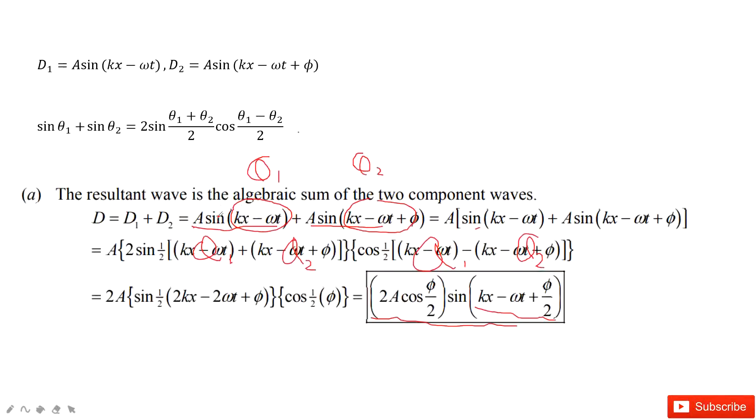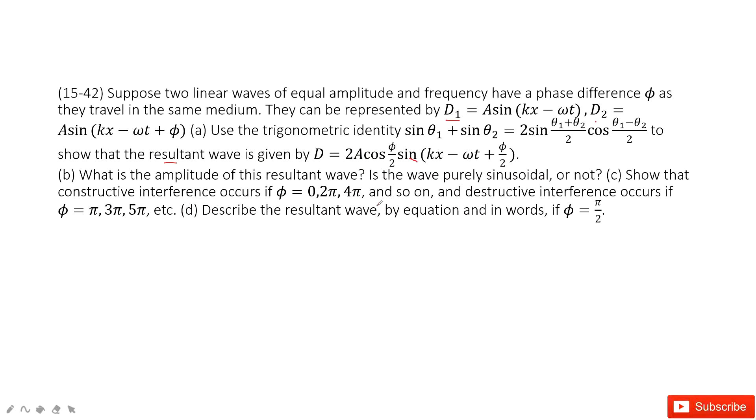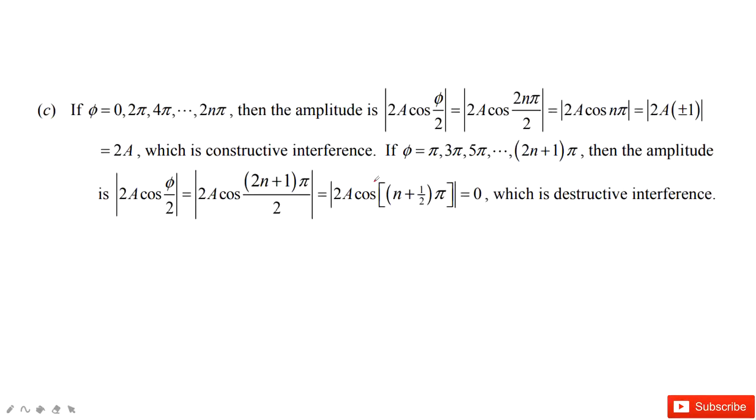The next one asks you to show the constructive interference occurs if φ is 0, 2π, 4π, and the destructive interference is φ equal to π, 3π, 5π. Of course, we just look at the amplitude, 2A cosine φ over 2.